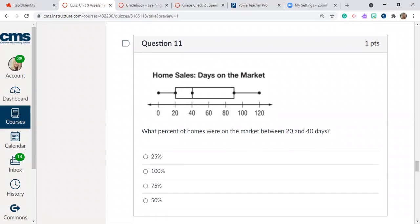Question number 11. Same box plot here of the home sales days on the market. What percent of homes were on the market between 20 and 40 days? 25 percent, 100 percent, 75 percent, or 50 percent?